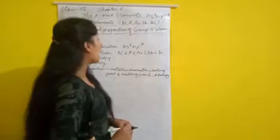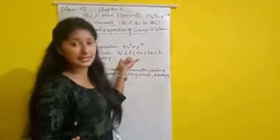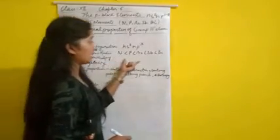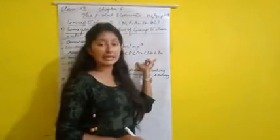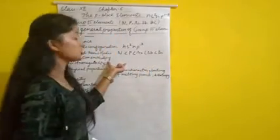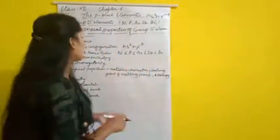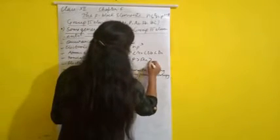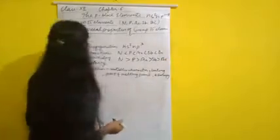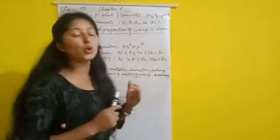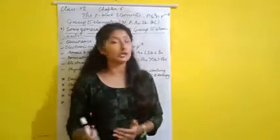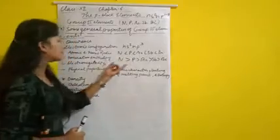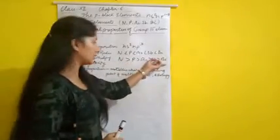Moving to ionization enthalpy: ionization enthalpy decreases on going down the group, as there is a gradual increase in atomic size. Because atomic size increases gradually, ionization enthalpy decreases accordingly. So from nitrogen to bismuth, ionization enthalpy decreases, and we can say nitrogen has the maximum ionization enthalpy in comparison to bismuth.